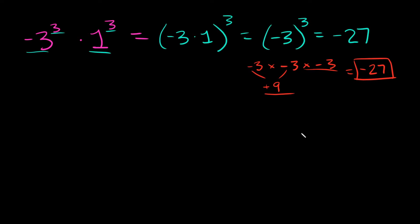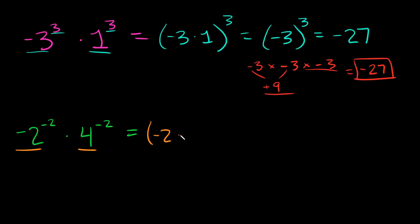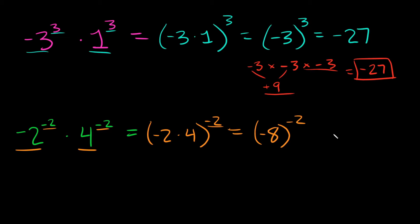Now let's use some negative exponents. If we had negative 2 raised to the negative 2 times 4 raised to the negative 2, we multiply the bases: negative 2 times 4, and keep the exponent negative 2. That gives us negative 8 to the negative 2. When we have a negative exponent, we put the whole thing over 1 and flip the fraction, making the exponent positive.